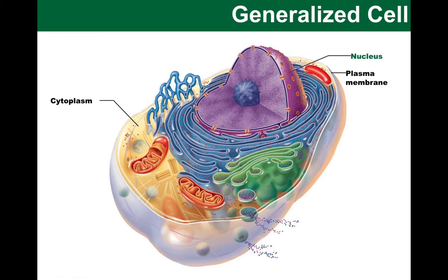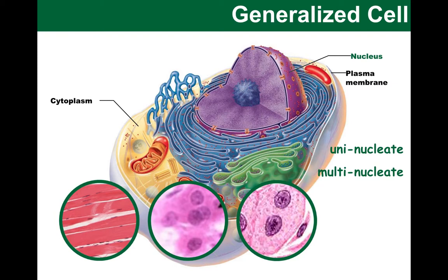Now we are ready to look at the nucleus. This is the largest organelle and contains the genetic information for nearly all proteins that the cell can make. It is also in charge of overseeing the cell's activities — some describe it as the control computer, CEO, or design department. Most cells are uninucleate, meaning they have only one nucleus. But some cells — like skeletal muscles, bone cells known as osteoclasts, and liver cells — actually have multiple nuclei and are known as multinucleate.